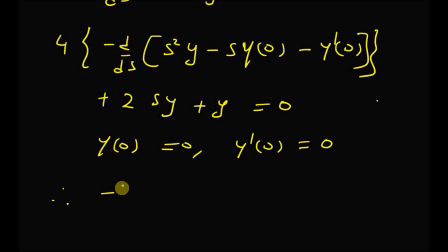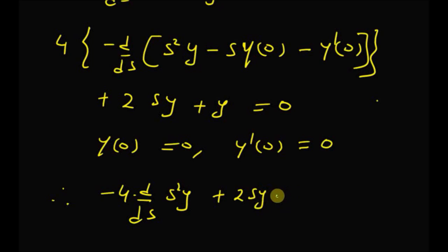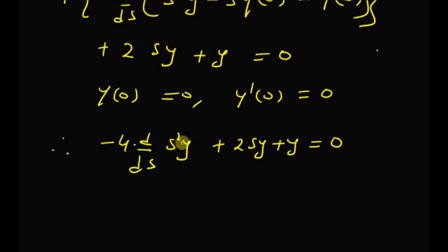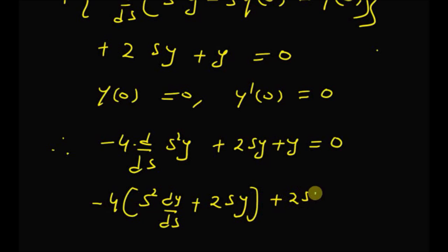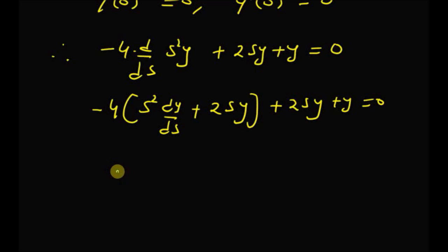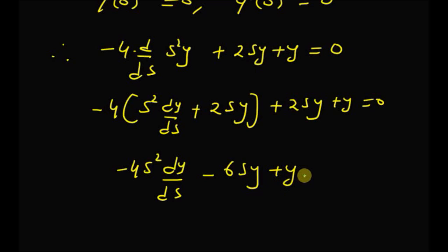Therefore, applying the derivative on the product, we have −4·(s²·dy/ds + 2s·y) + 2s·y + y = 0. Upon simplification, this becomes −4s²·(dy/ds) − 8s·y + 2s·y + y = 0, which gives −4s²·(dy/ds) − 6s·y + y = 0.